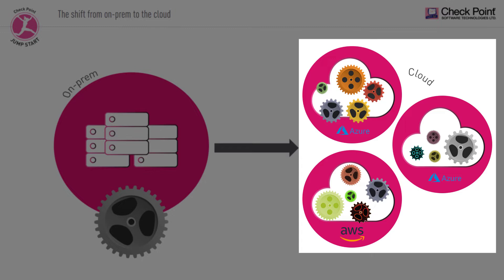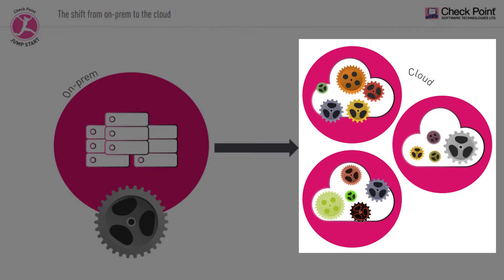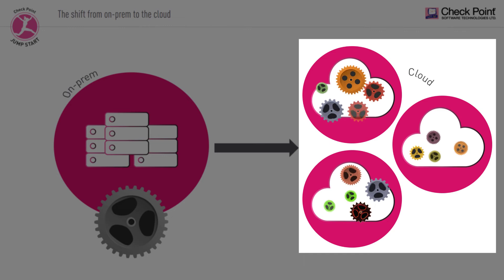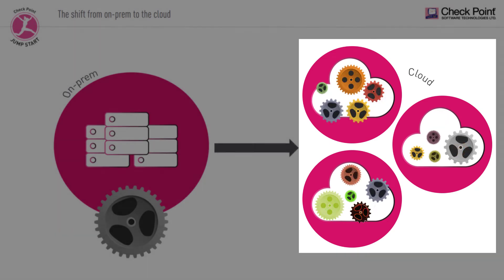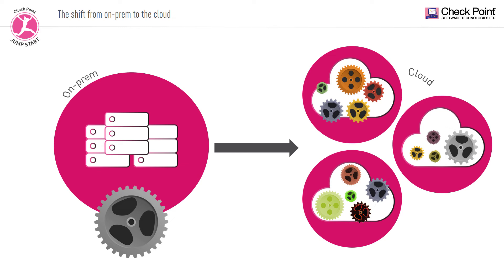Infrastructure elements that were static in the corporate data center are now abstracted to software in the cloud, and their entire lifecycle may only be a matter of minutes or seconds — what is known as ephemeral. On top of this abstraction, decentralization, and scattering of IT components, the management of various components becomes decentralized as well.